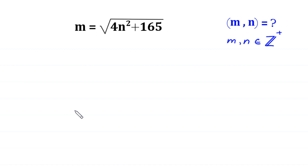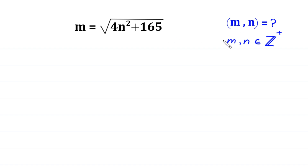Welcome to How to Solve this very nice algebra equation. M is equal to square root of 4n squared plus 165. We need to find all possible values of m and n, where m and n are positive integers.